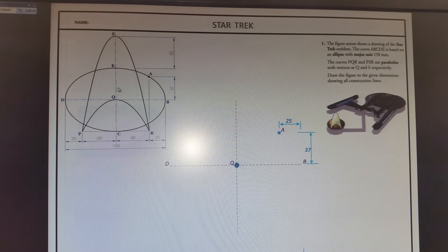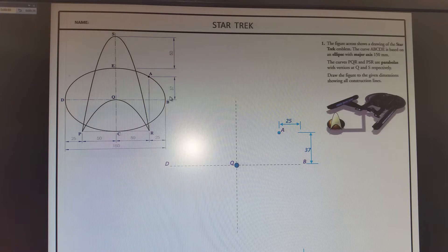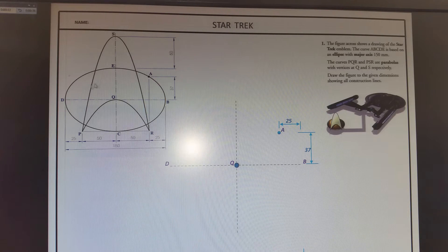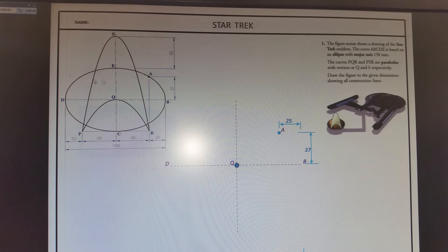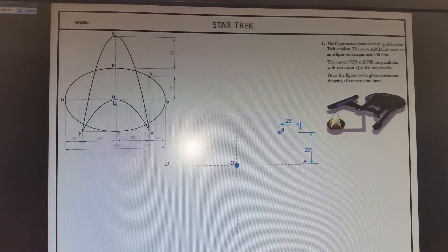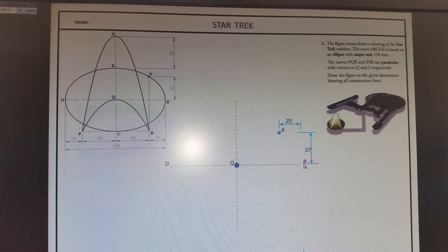So we'll start off, the question dimensions are shown there. The figure shows the drawing of a Star Trek emblem. The curve ABCDE is based on the ellipse of the major axis of 150. There's ABCDE. So, what do we know? We have the major axis, which is 150. We have the centre, which is Q. We have a point on the ellipse, which is A. A is up 37 and out 25.